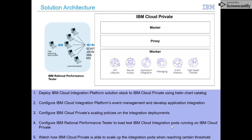IBM Cloud Private is the enterprise-ready version of Kubernetes supported by IBM. IBM has packaged Kubernetes with all the platform management functions, including a catalog of services, DevOps services, automation using Cloud Automation Manager, Multi-Cloud Manager, and many more.